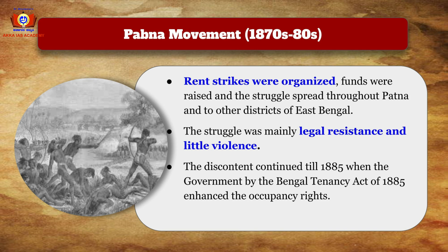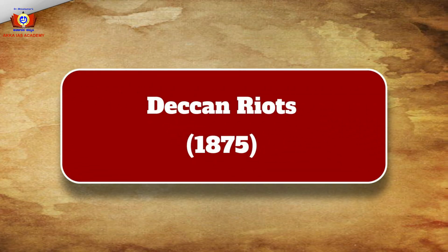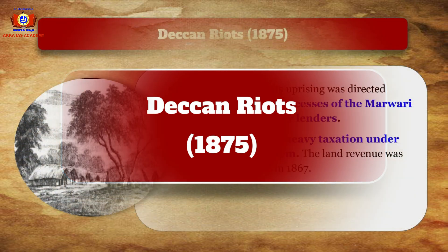The struggle was mainly legal resistance with little violence. The discontent continued till 1885 when the Bengal Tenancy Act was passed, enhancing occupancy rights. The struggle was supported by Bankim Chandra Chatterjee, R.C. Dutt, and the Indian Association under Surendranath Banerjee.